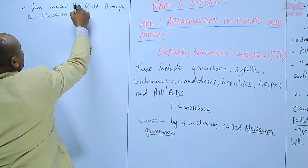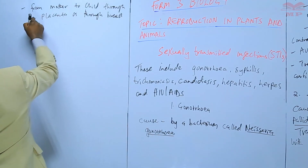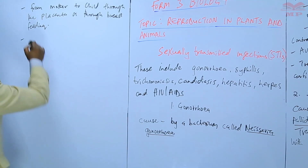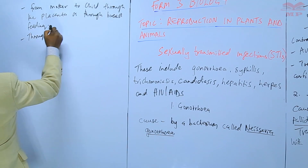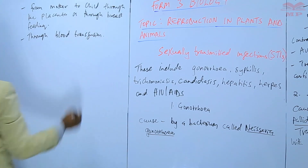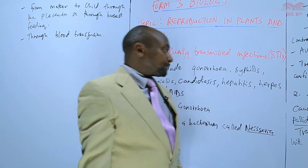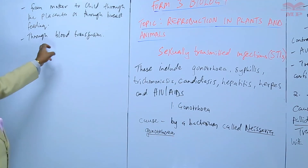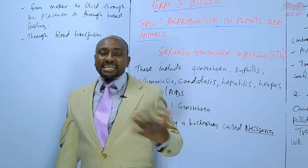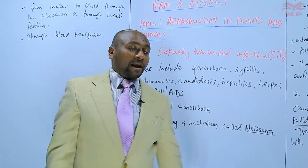Syphilis can also be transmitted through breastfeeding, and through blood transfusion. Blood transfusion is another way in which the disease can be transmitted, so syphilis has more transmission routes. That is why it is important that blood is screened to check whether it is contaminated before it can be administered to a person.